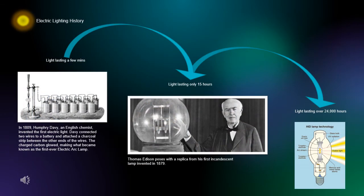The history of electric lighting started in 1809 by an English chemist named Humphrey Davy. Davy invented the first ever electric arc lamp by connecting two wires to a battery and attaching a charcoal strip between them, which charged carbon and made it glow. This light, although intense, was very unreliable, only lasting a few minutes.